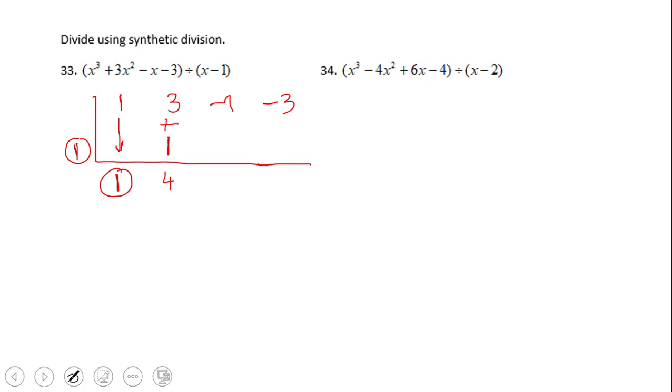Then we're going to add these two and we get 4. Then we multiply again, this 1 by this 4, 1 times 4 is 4. Again we add, we have negative 1 plus 4, that is positive 3. We have one more time to do it. So we do 1 times 3, 1 times 3 is 3. We add them and we get 0. The last number here is what we call the remainder.